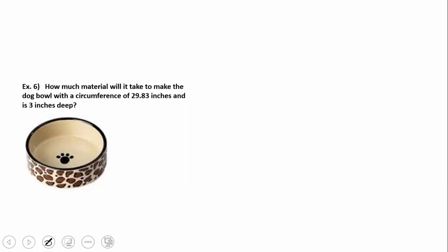Moving right along to our last example of our real life application. It says how much material will it take to make the doggy bowl with a circumference of 29.83 inches and is three inches deep. Well I'm taking a quick look and I see I have basically a cylinder. So I know it's 2 times the area of the base plus the perimeter times the height, or for those of you who like to say the circumference times the height.